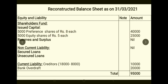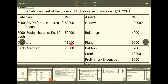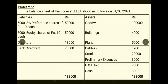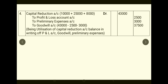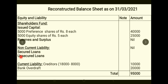Under Shareholders' Funds: 5,000 Preference Shares of Rs.8 each = Rs.40,000; 5,000 Equity Shares of Rs.5 each = Rs.25,000 — these come directly from entries 1 and 2. Creditors: old balance Rs.18,000 minus Rs.8,000 foregone = Rs.10,000. Bank Overdraft remains unchanged. No debentures or other loans, so Secured Loans and Unsecured Loans are nil.